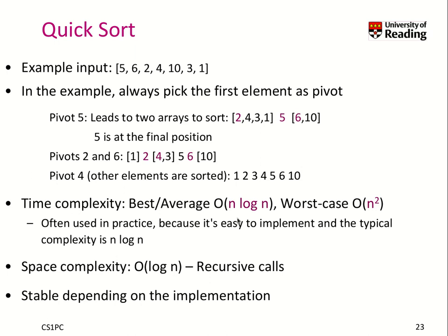The time complexity analysis shows a best case of O(n log n), which is better than the O(n²) of our previous algorithms. Unfortunately the worst case is still O(n²). Nevertheless, quicksort is often used in practice because it's easy to implement and in most cases runs at O(n log n). In terms of space complexity, the recursive calls themselves can be considered part of the space usage, though no extra storage array is needed. The stability behavior depends on the implementation.